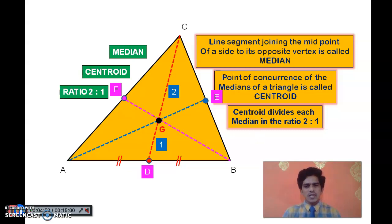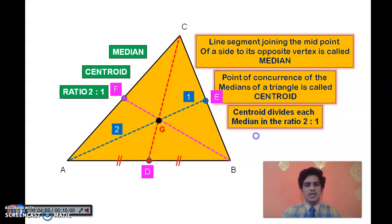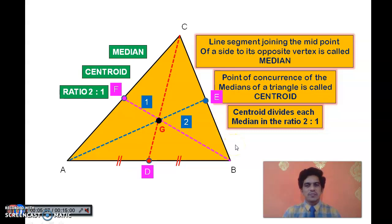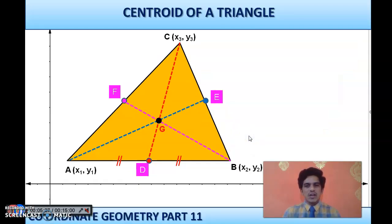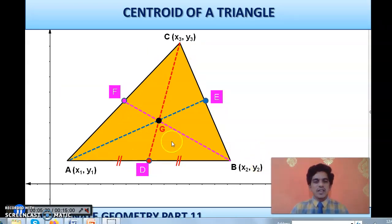The centroid divides not only median CD but each median — AE and BF — in the ratio 2:1. Now our aim is to derive a formula to find the coordinates of the centroid of a triangle using these facts. The centroid is the point of concurrence of the medians, and it divides each median in the ratio 2:1.